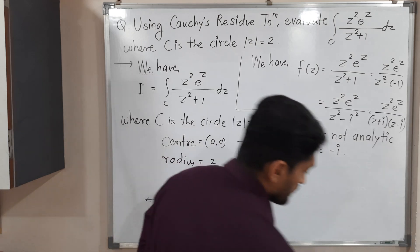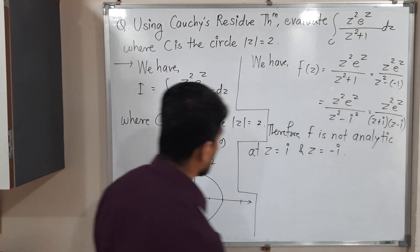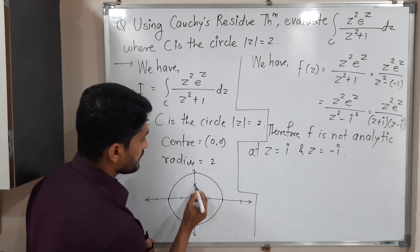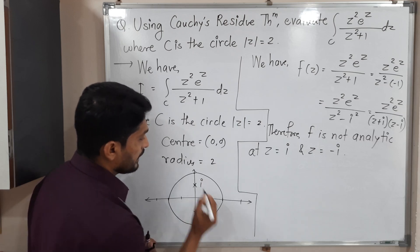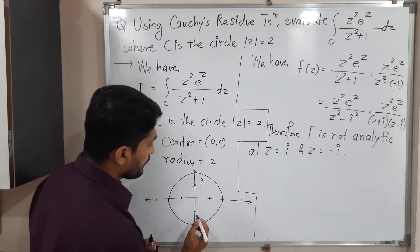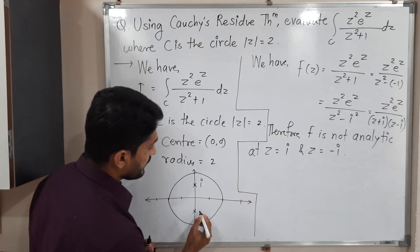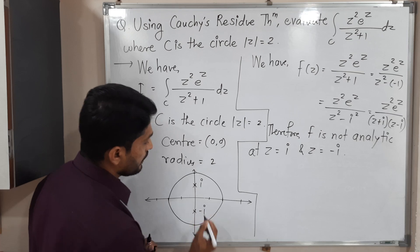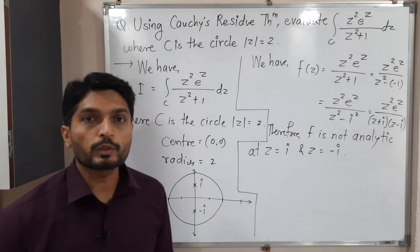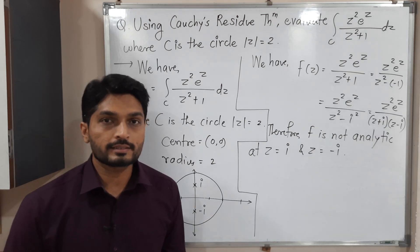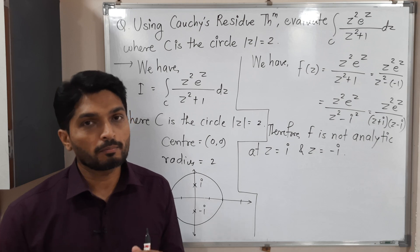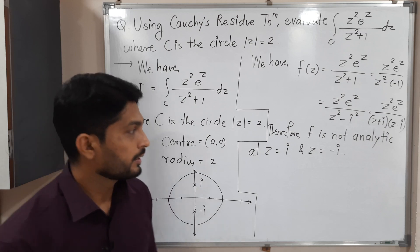The point z = i lies at distance 1 from the origin, which is inside the circle of radius 2. The point z = −i also lies at distance 1, so it too is inside the circle. Both singular points lie inside the circle, meaning we have to find residues at both poles.